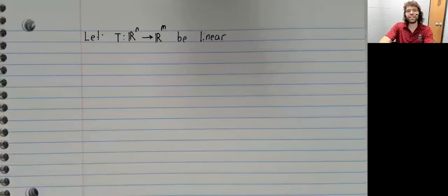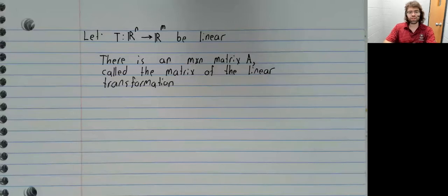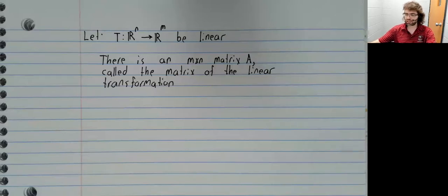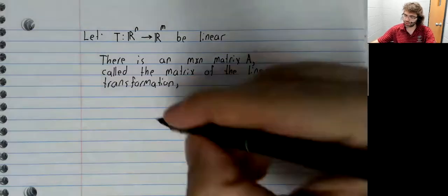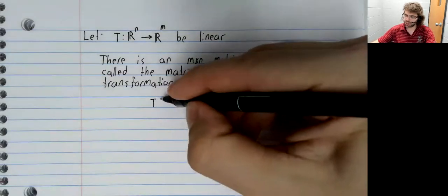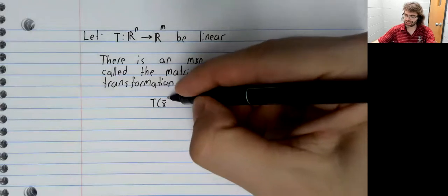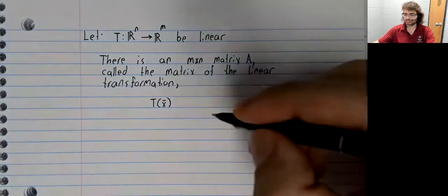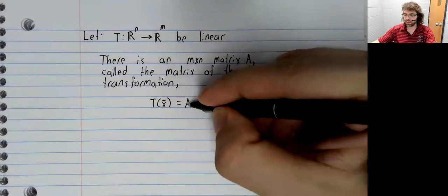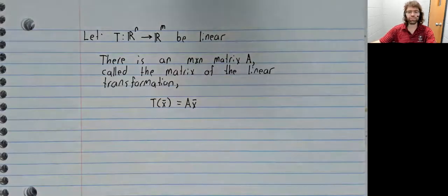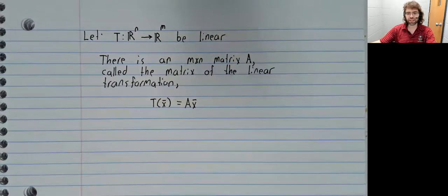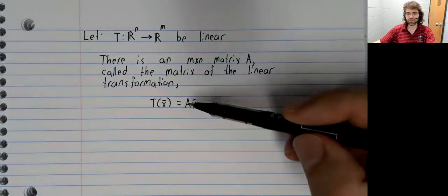Suppose you have any linear transformation. Then there is a matrix A, called the matrix of the linear transformation, such that applying this transformation T to a vector is the same as matrix multiplication by this matrix.